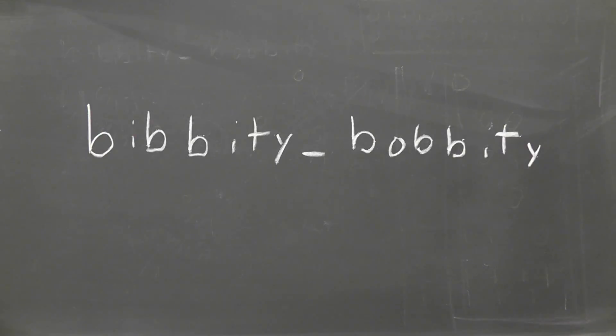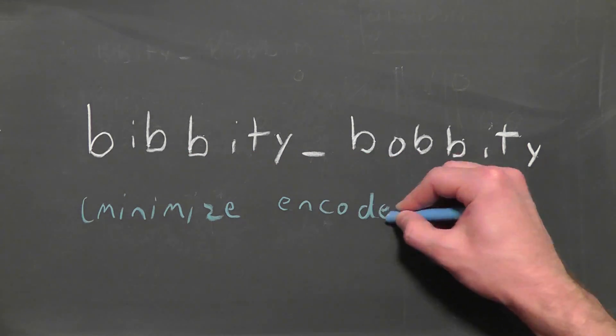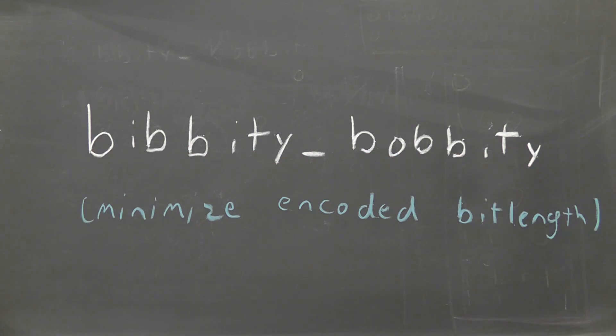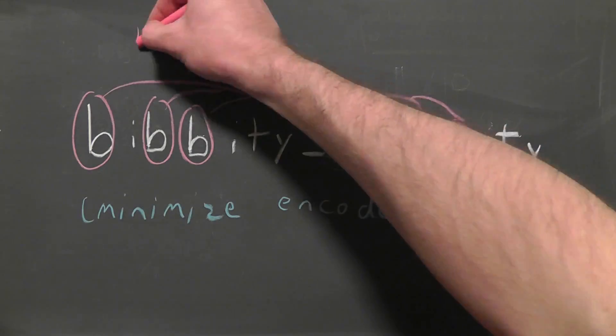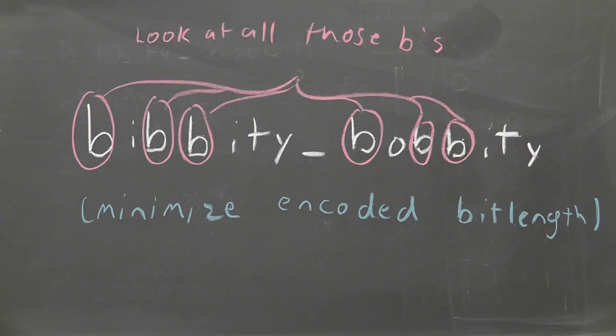Here's the idea. We start with a phrase we want to encode into bits. Let's say bibbidi-bobbidi. If we want to minimize the number of bits, it doesn't make sense to use the same number of bits to describe all characters. After all, b is used so often that if it is only one bit shorter than the other characters we could save a lot of space.